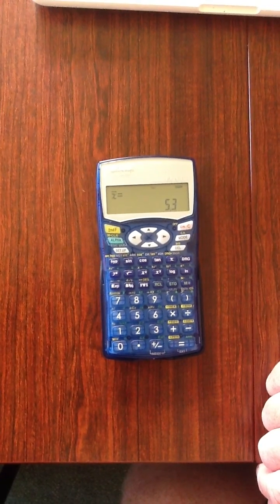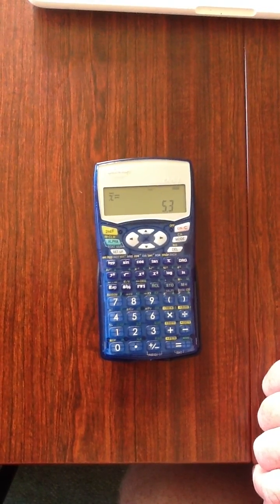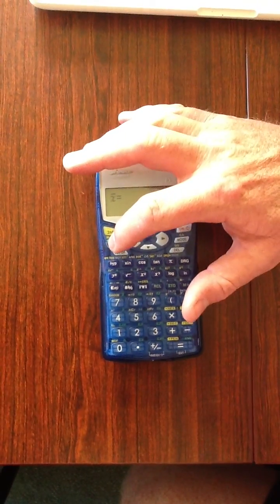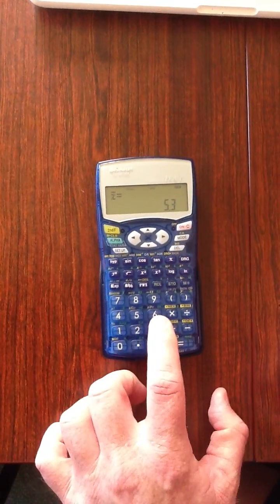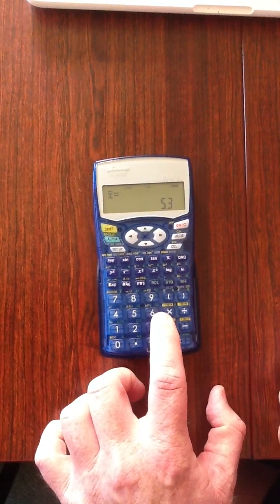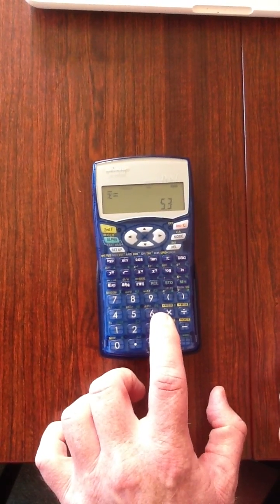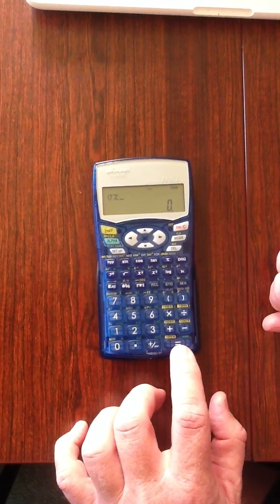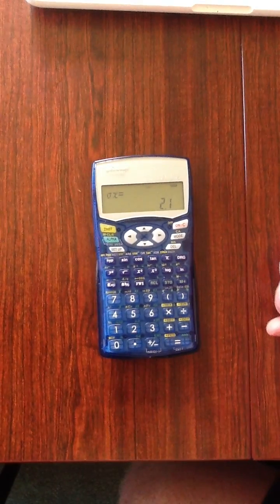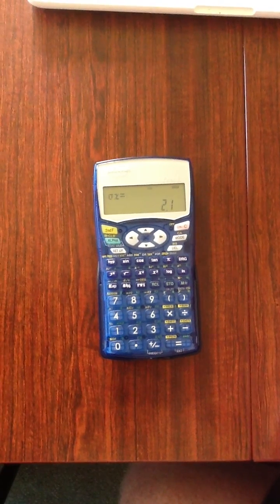To calculate the population standard deviation, we press alpha and then we need to press 6. You're looking for that green sigma x. So we press alpha 6, and then equals. And there is our standard deviation.